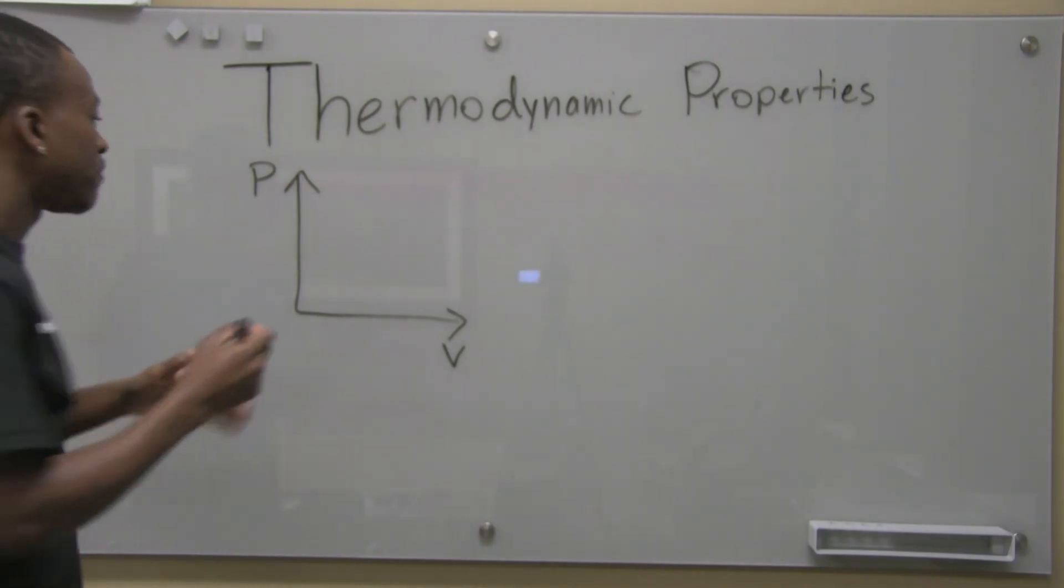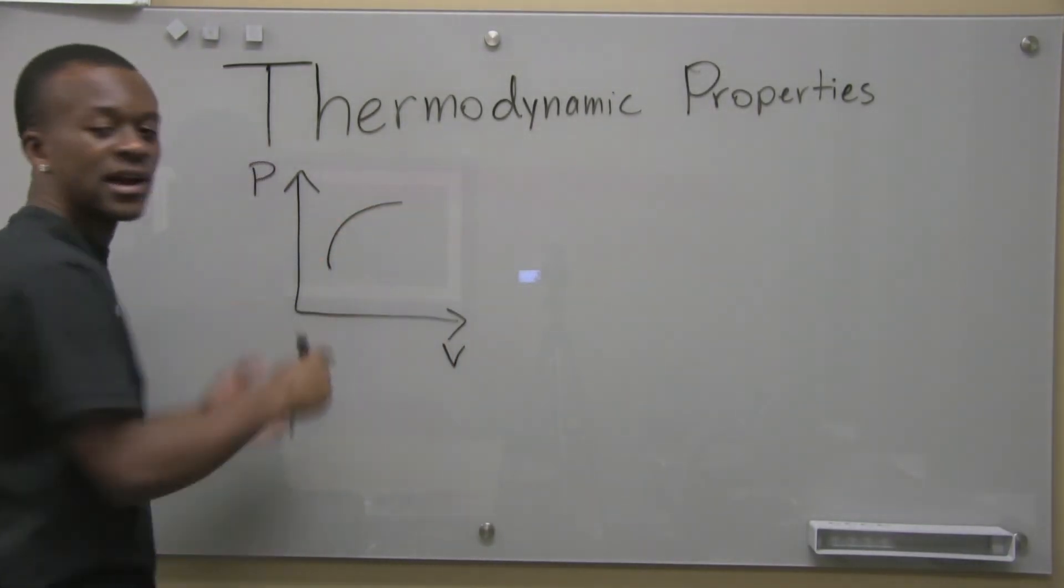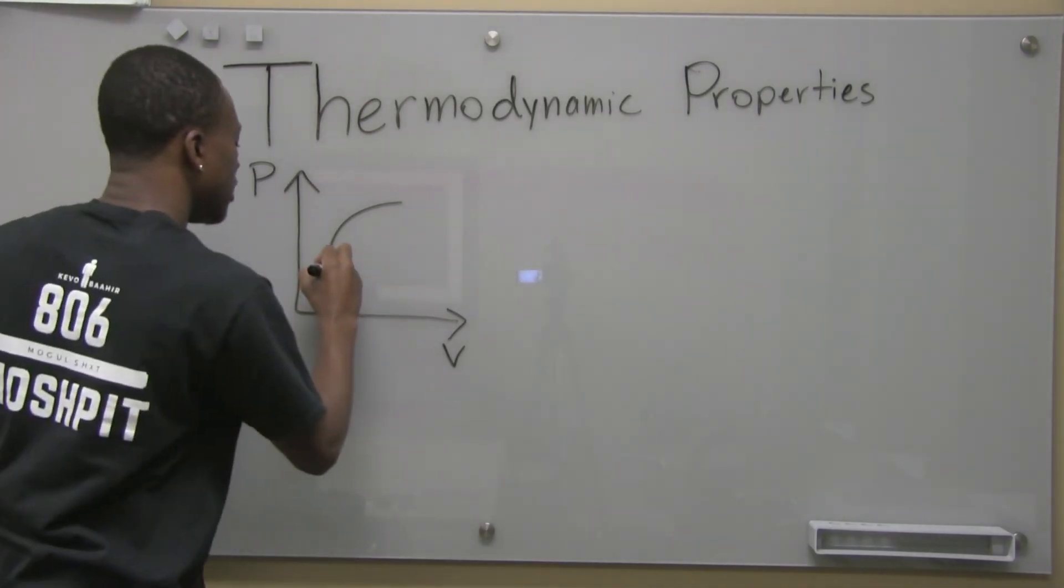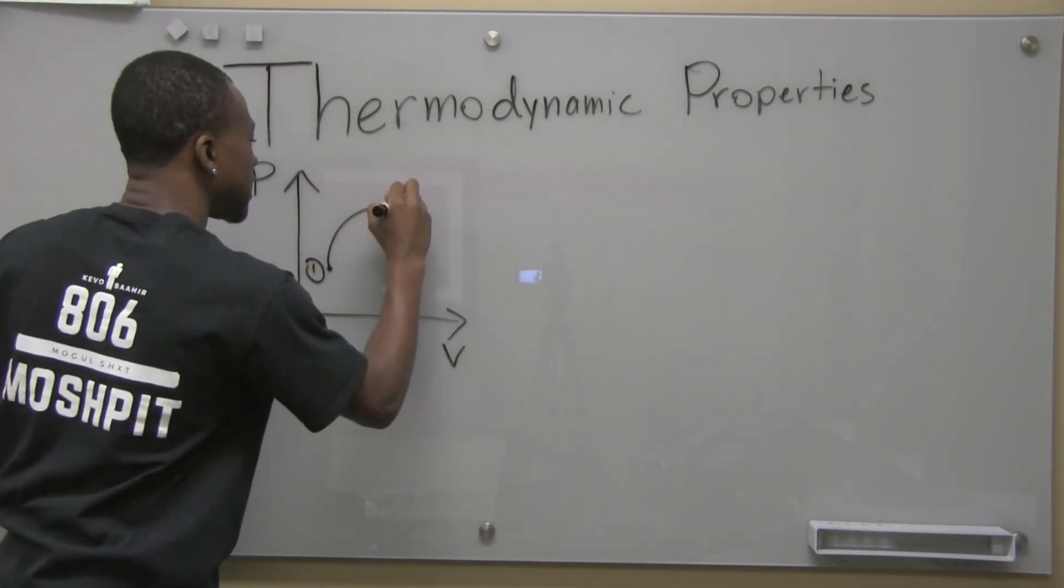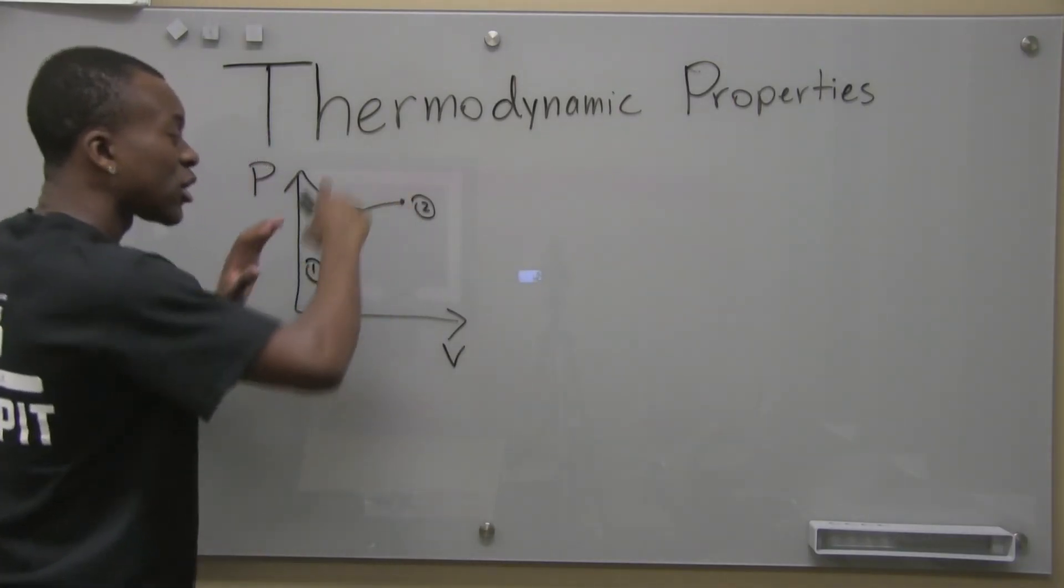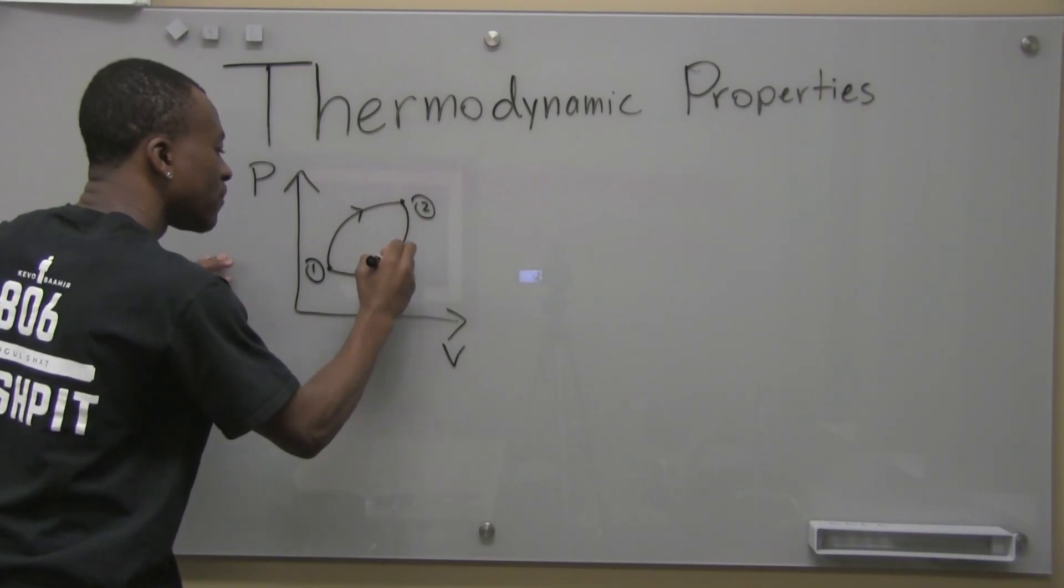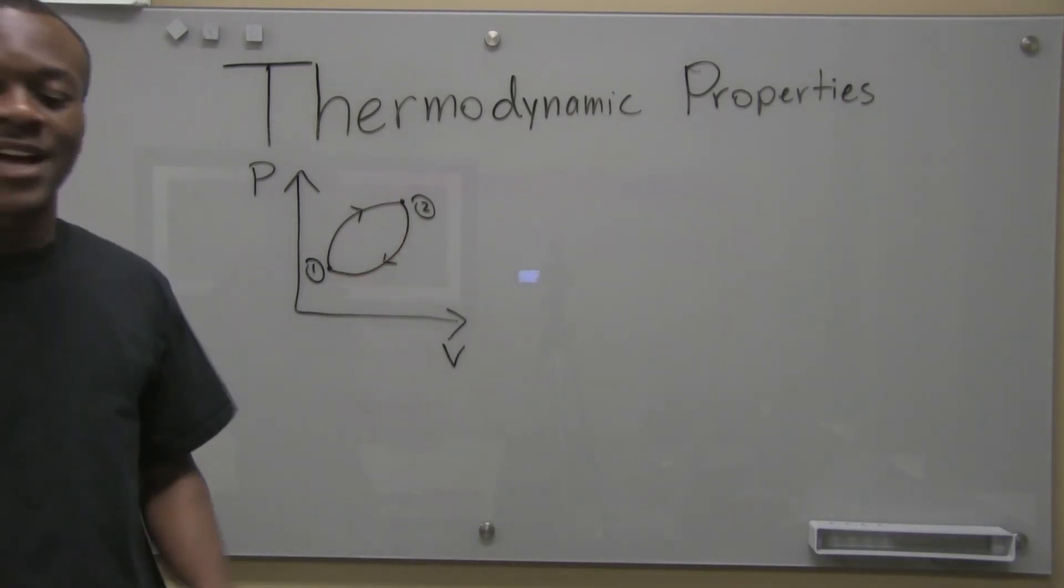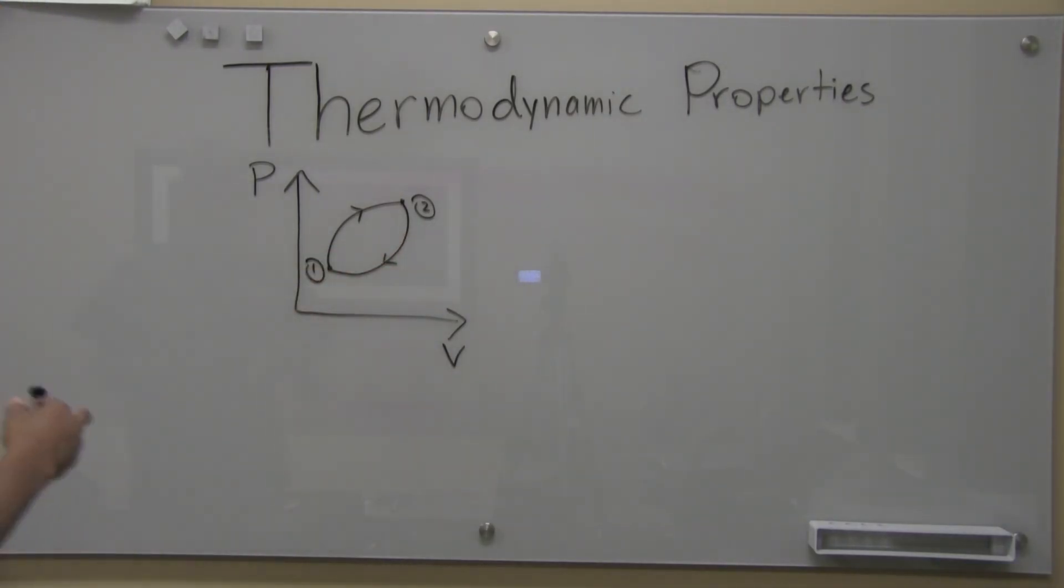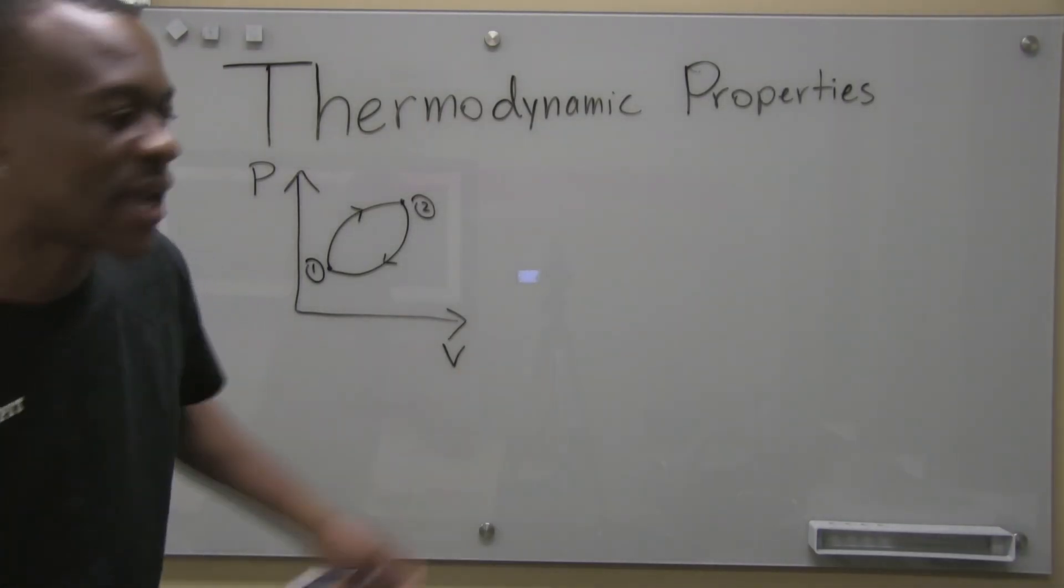Let's say my system is going from one state to another. How do I know which direction it's going in? First state, second state. Let's say we're to come back to that same state, that first state. That's what we know is a cycle. The first, the start and end points are identical. So I mean, it's pretty simple. That's what a cycle is.